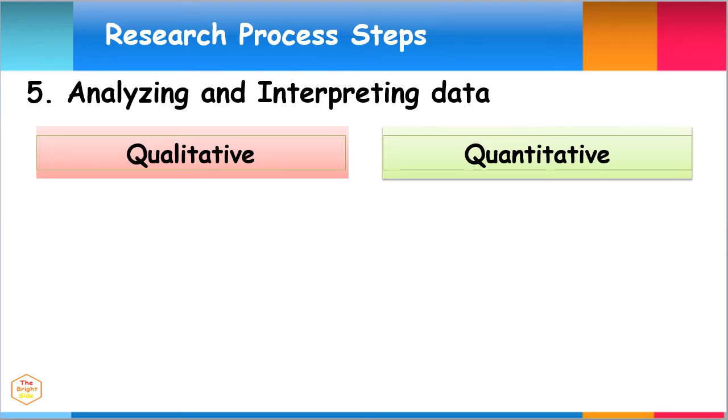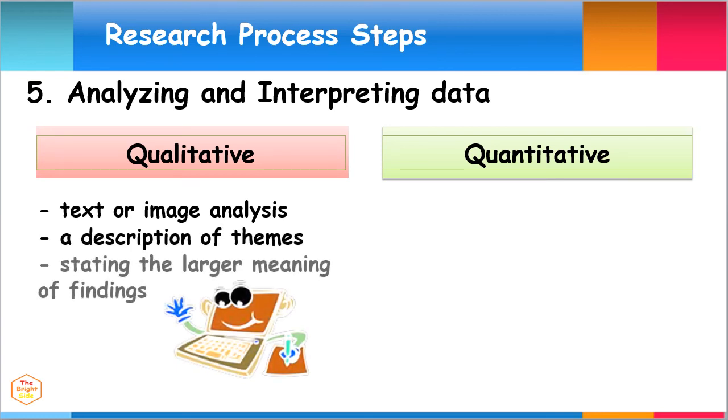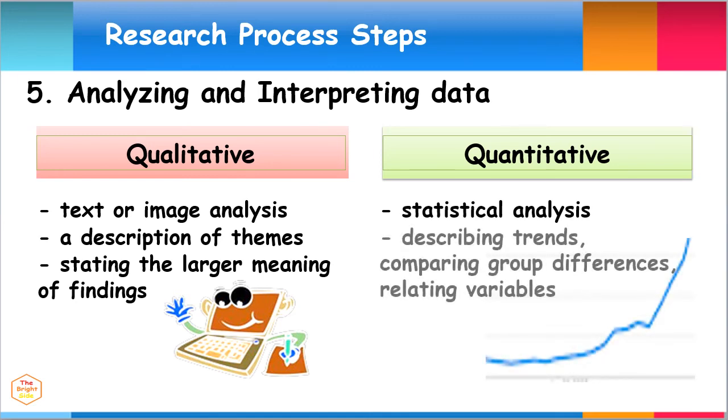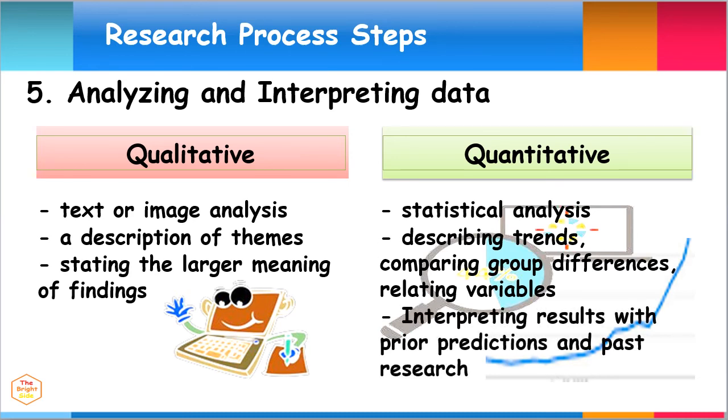In qualitative research, the collected data may be analyzed and interpreted by text or image analysis, getting a description of themes that emerged, or by stating the larger meaning of findings. In quantitative research, data analysis tends to consist of statistical analysis, describing trends, comparing group differences, or relating variables. Interpreting data tends to consist of comparing results with prior predictions and past research.